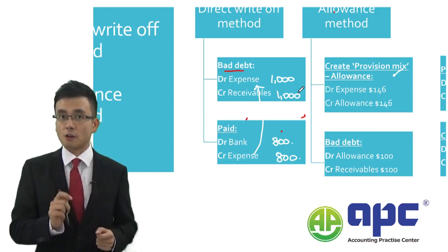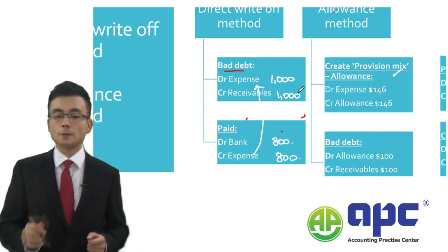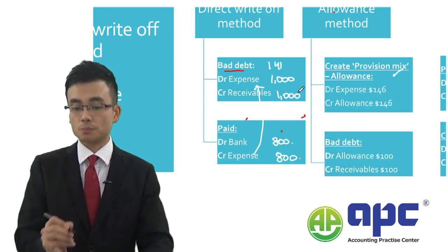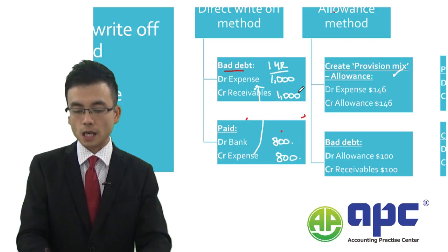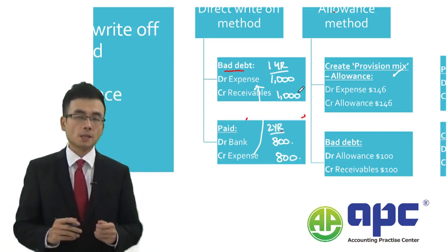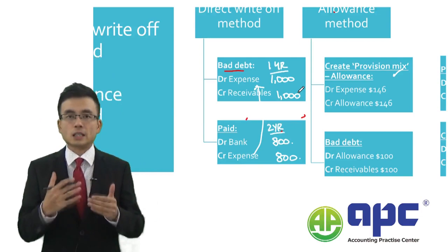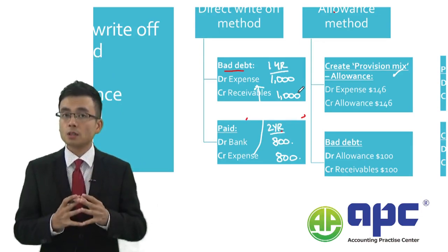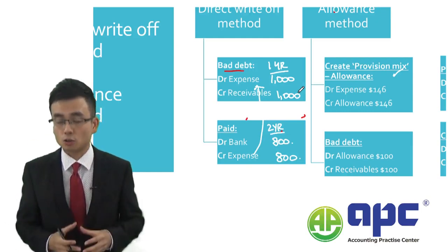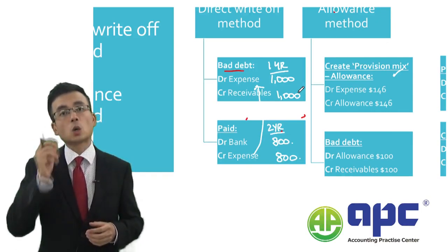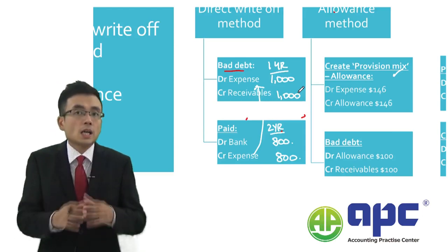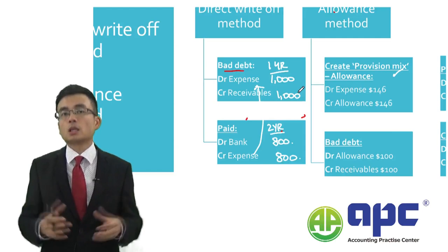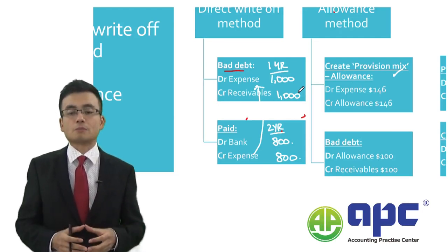But the downside of the direct write-off method is that the bad debt may incur in year one, and subsequently in year two I receive payment from the customer. That means the reduction in the irrecoverable debt expense does not really match with the first year transaction, and that causes a big problem.